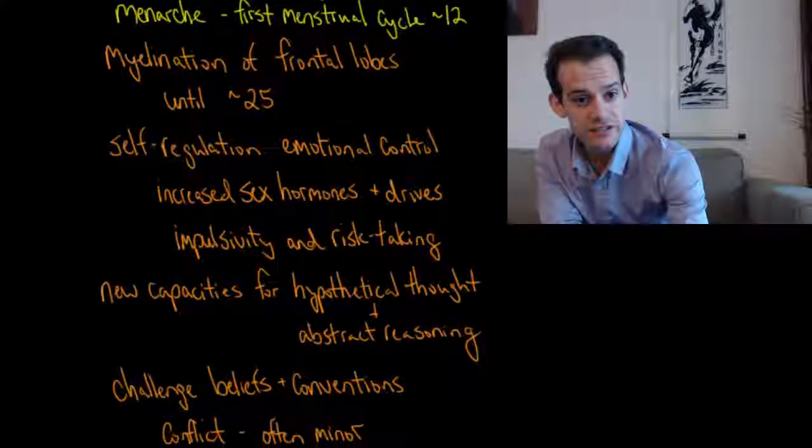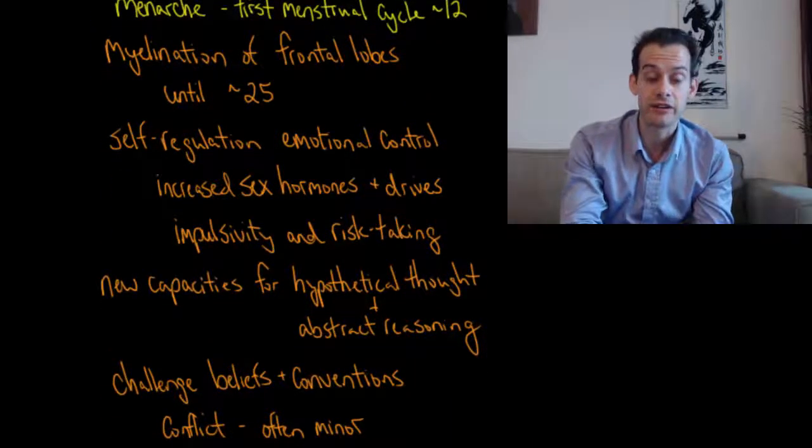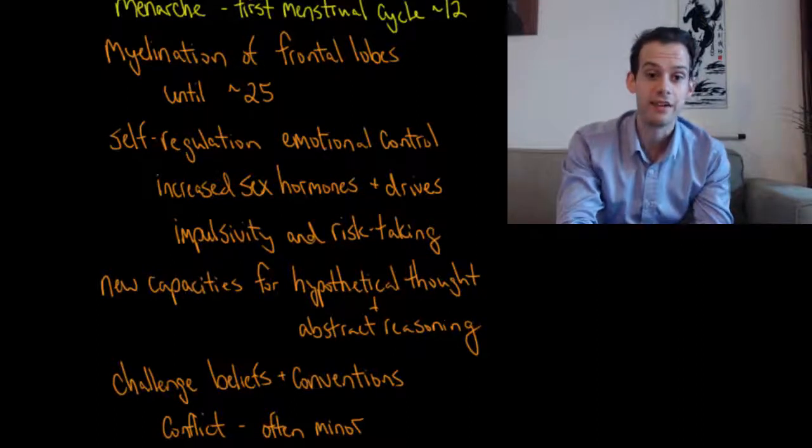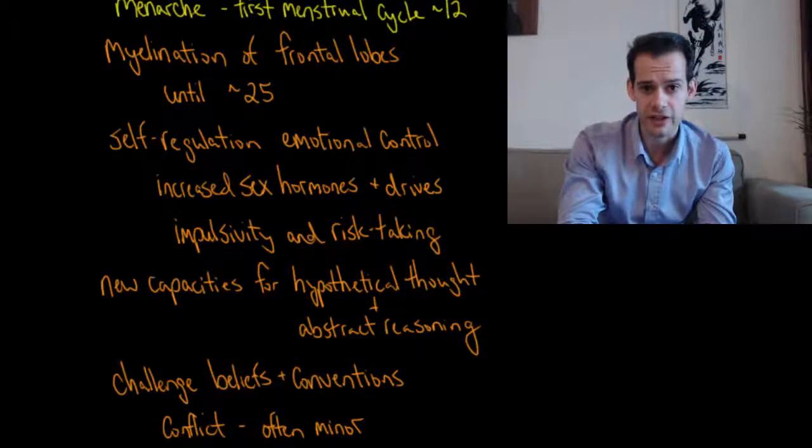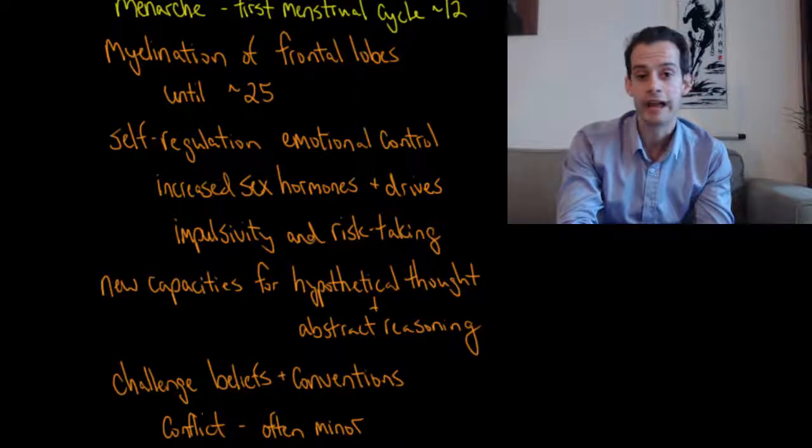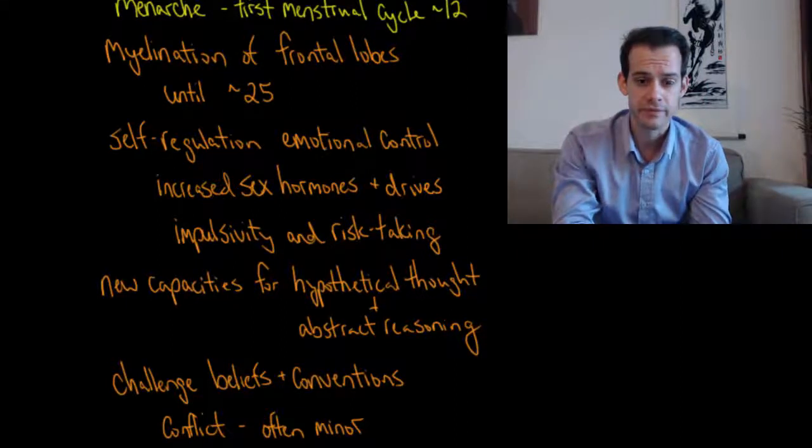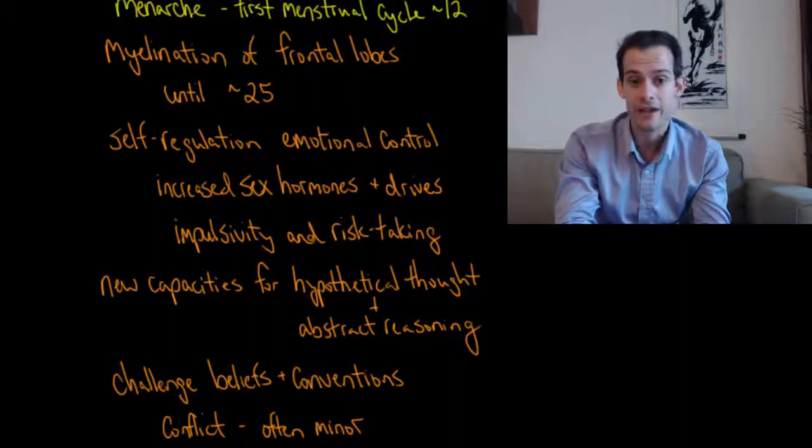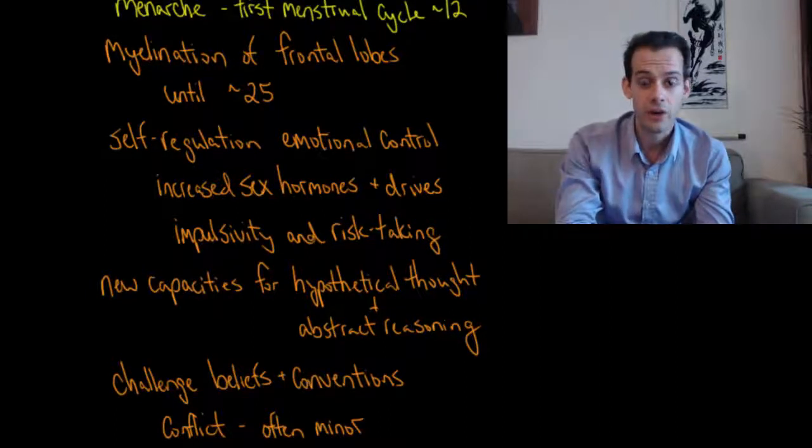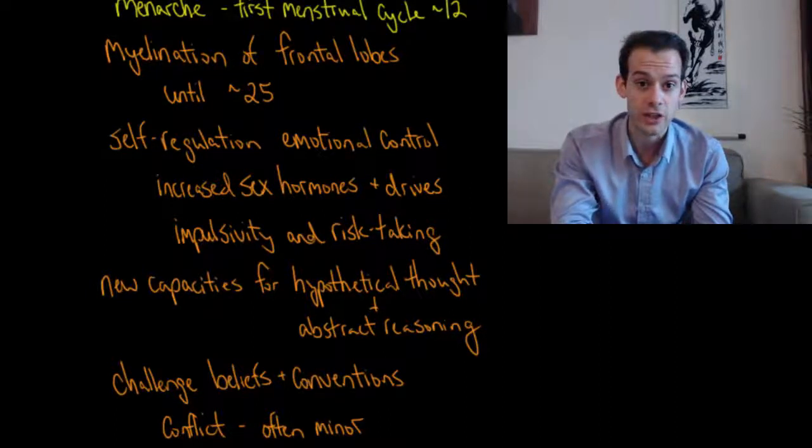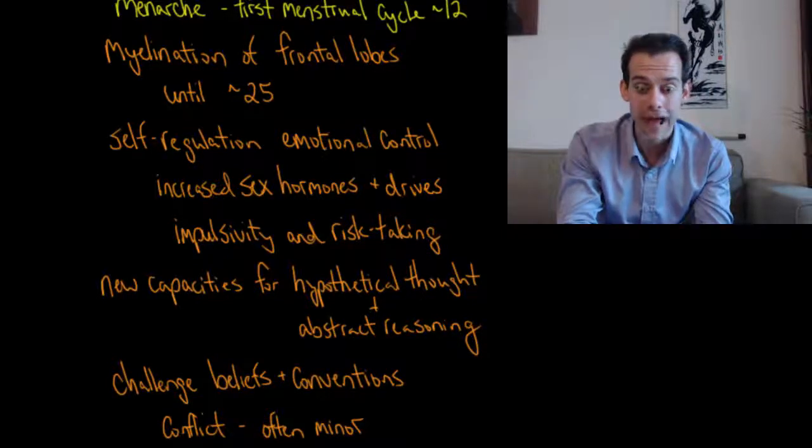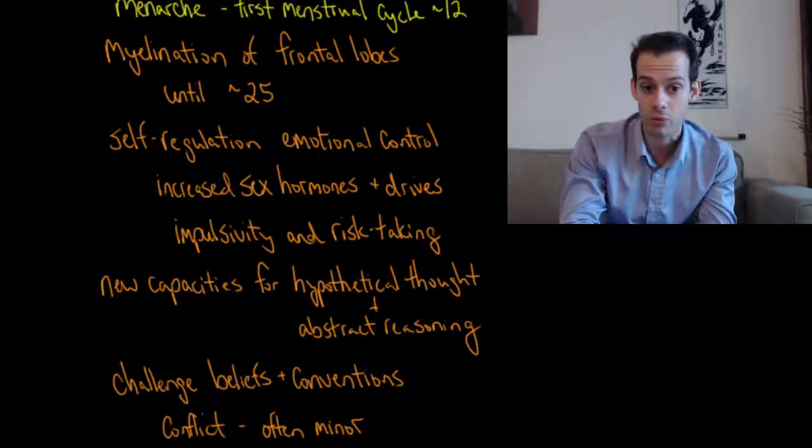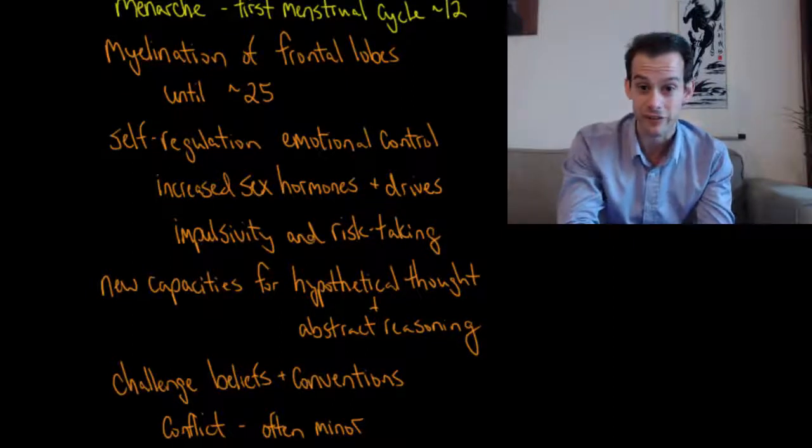In both boys and girls, we see that adolescence is associated with the process of myelination of the frontal lobes. This is a slow process that will continue until about age 25. This myelination of the frontal lobes is associated with increased capacity for self-regulation and for emotional control. We have these great increases in sex hormones and new drives and motivations for sexual behavior happening at a time where we don't yet have full capacity for regulating our behavior and controlling our emotions. This might help us understand the impulsivity and risk taking that's often associated with adolescence.